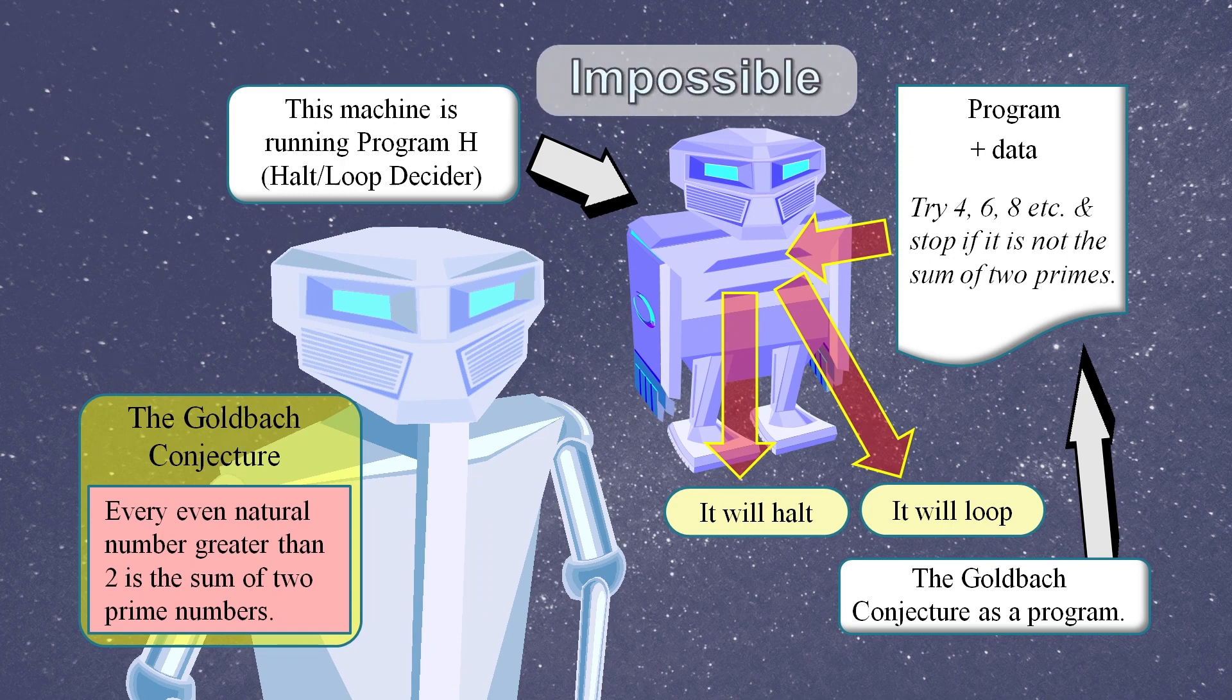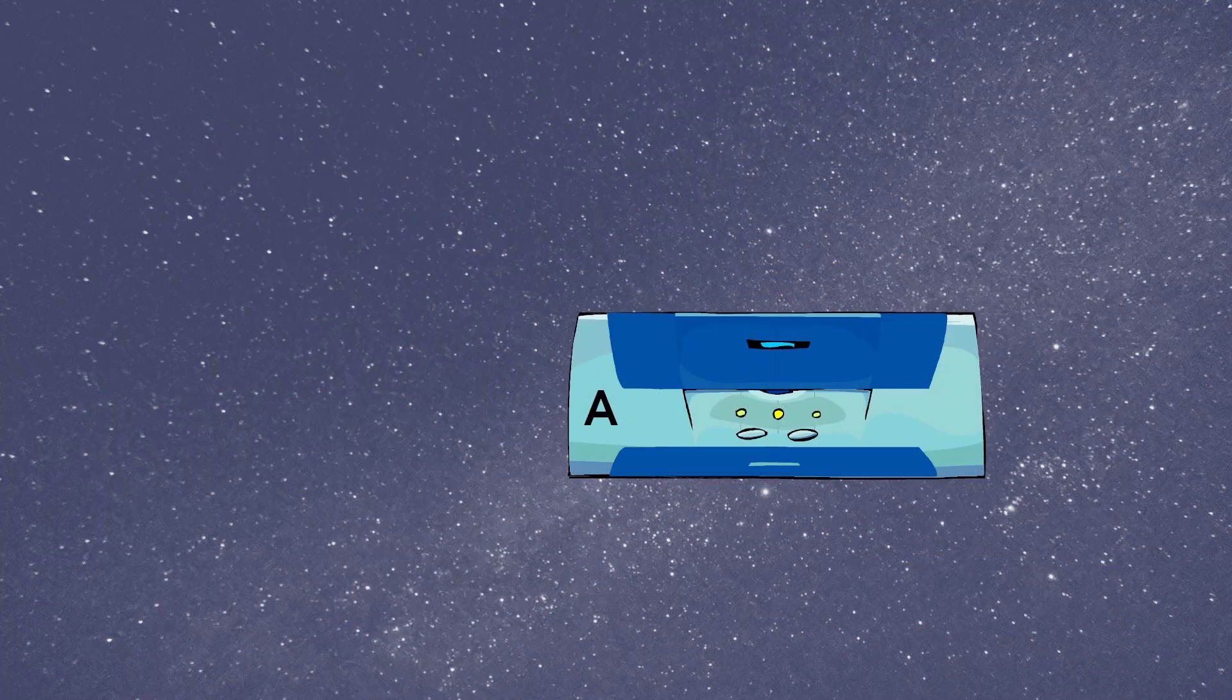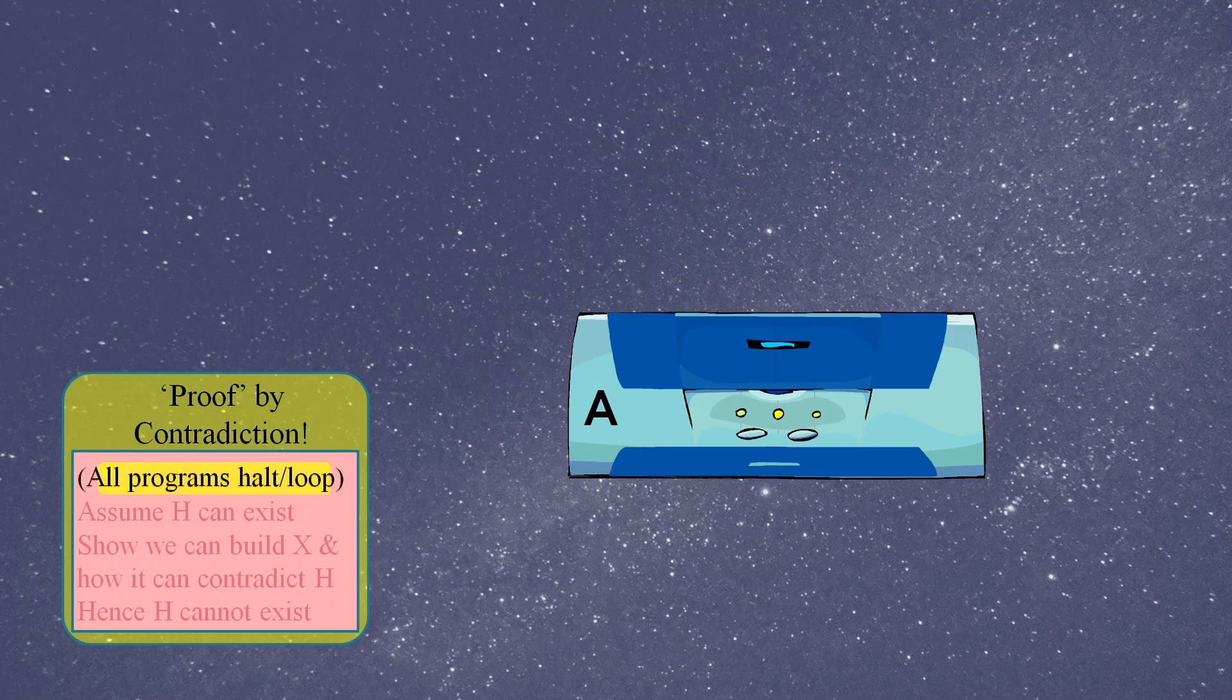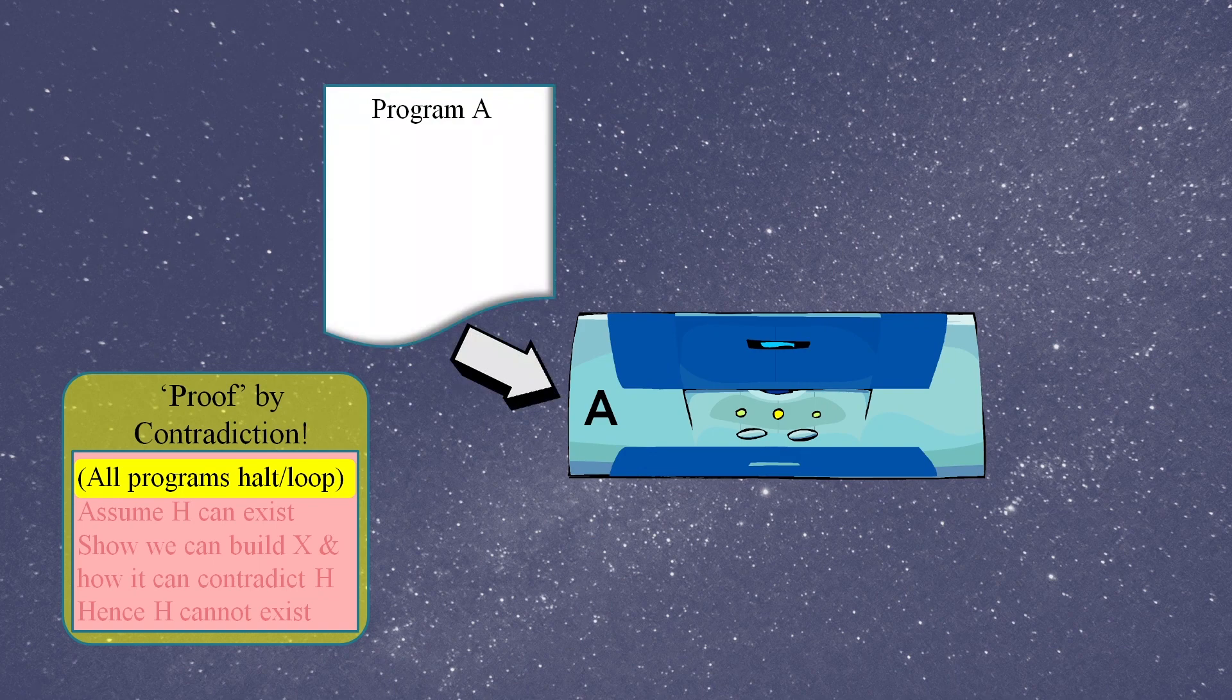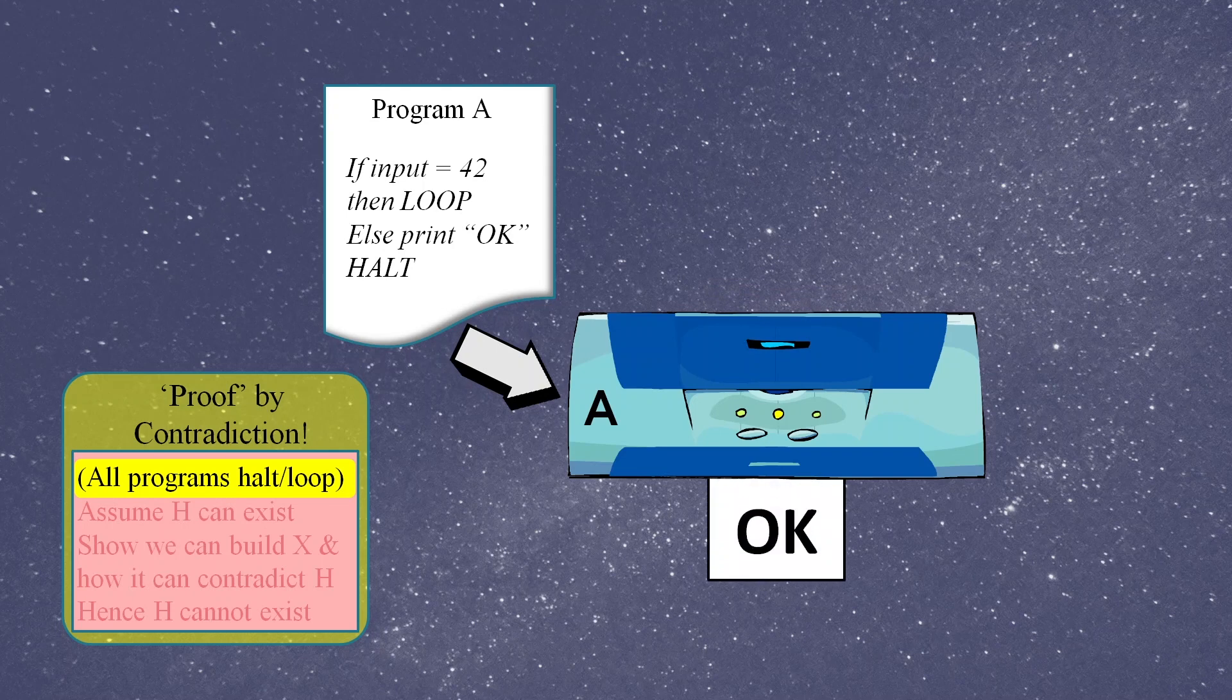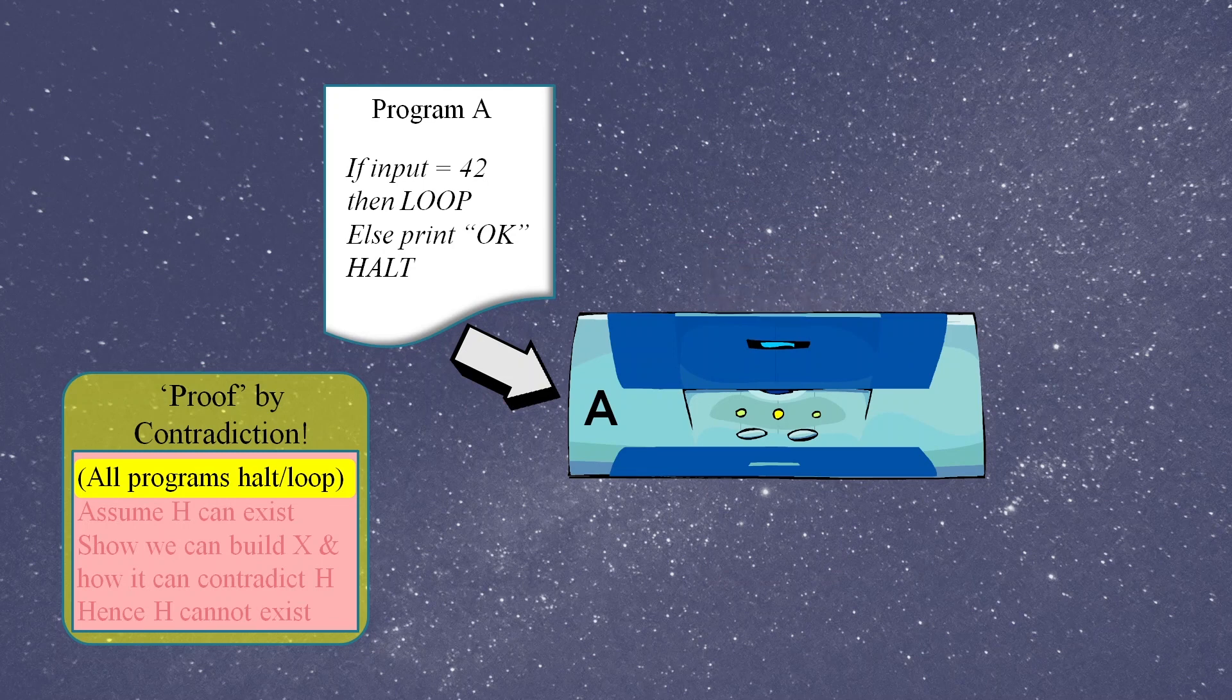But Alan Turing devised a proof from which he concluded that it was impossible to devise a halt or loop decider. His proof goes like this: it starts by claiming that all programs must either halt or loop.